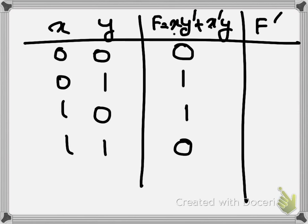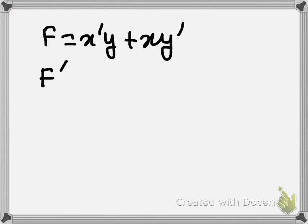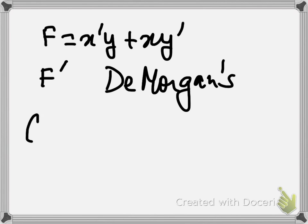In the third row, x is 1 and y' is 1, so the output is 1. In the fourth row, the first term gives 0 and x' is 0, so the result is 0. That is the function f. To take the complement, wherever f has a 0 we make it 1, and where it has a 1 we make it 0. So f' is the complement of f. But what about the algebraic expression? To find f' algebraically, we need De Morgan's theorem.